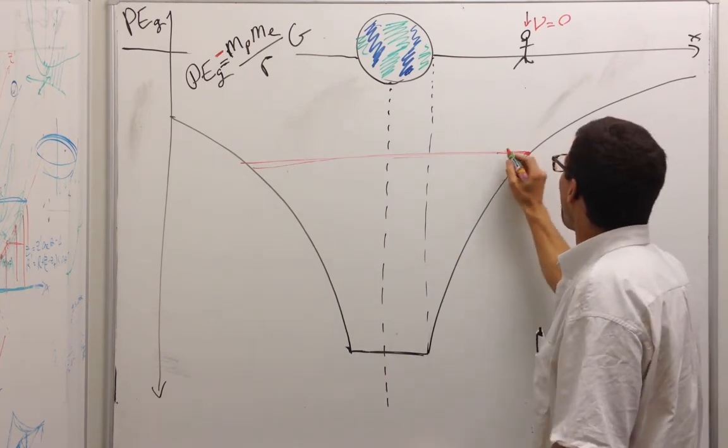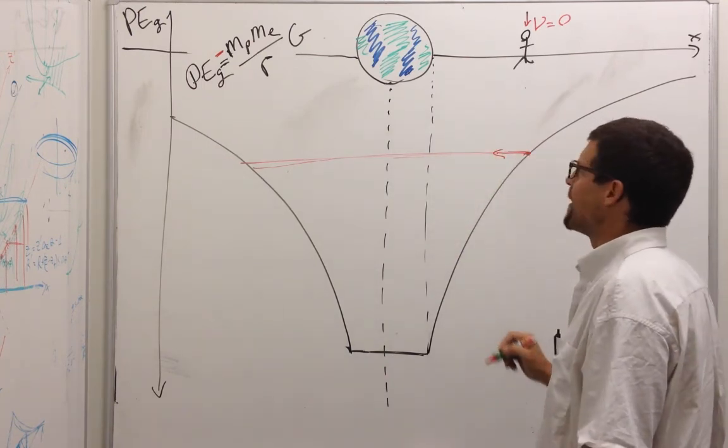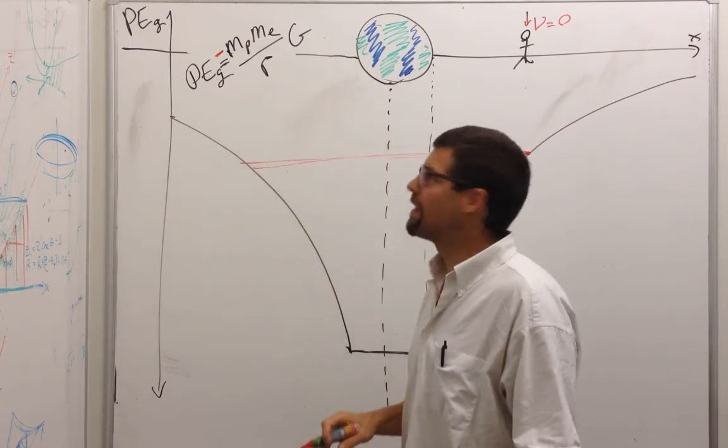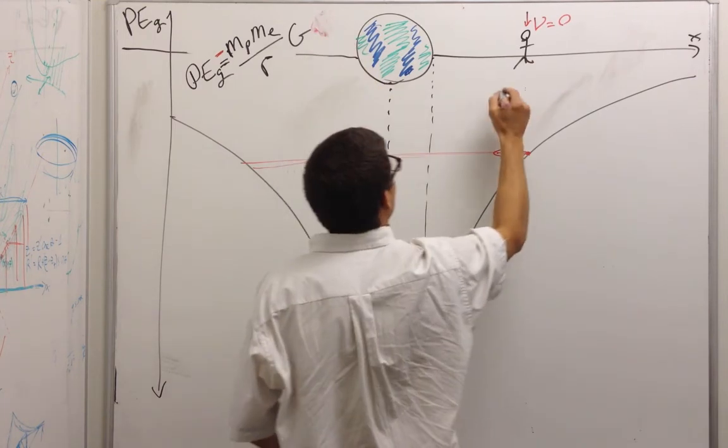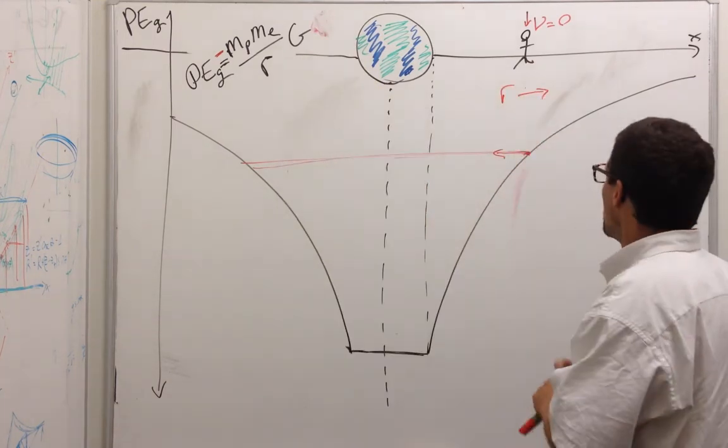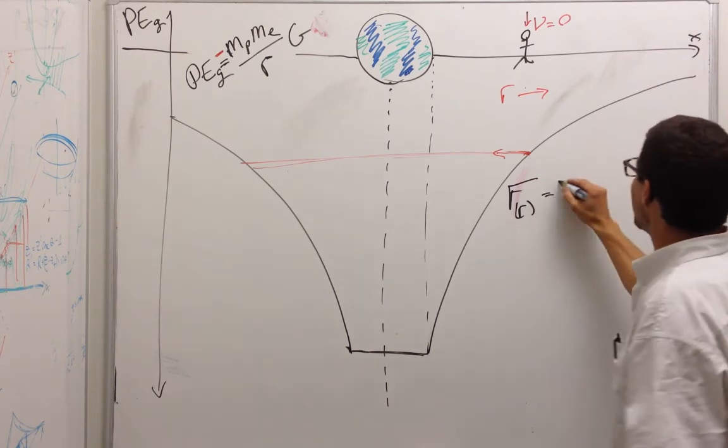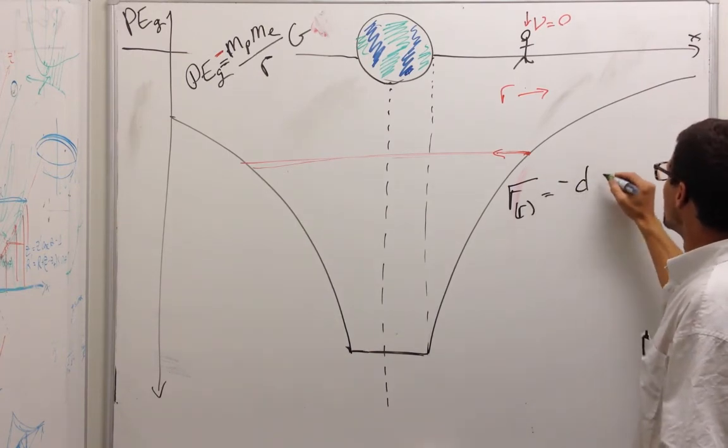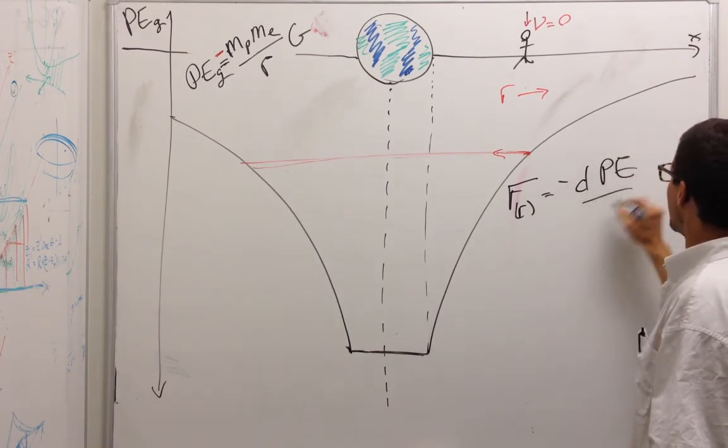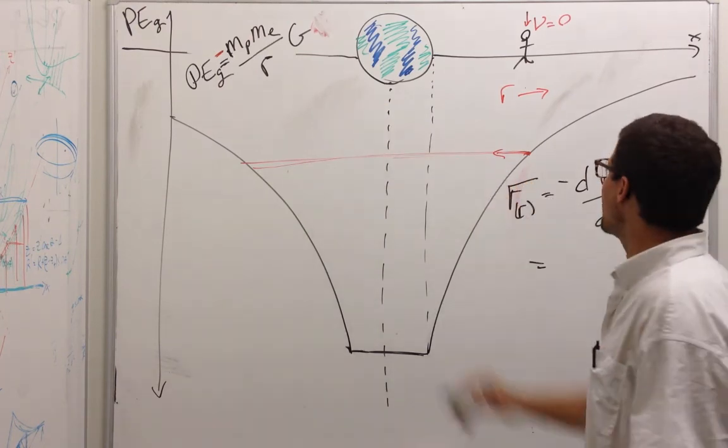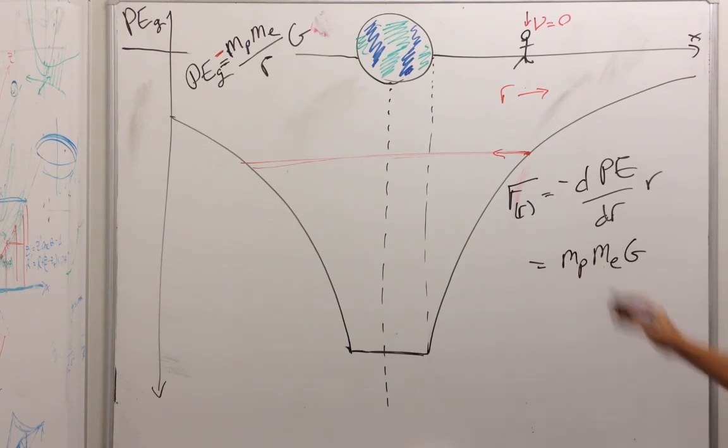But we're curious, what is the force pulling you to the planet? We know that it should be the gradient of that potential energy. Let's call this the r direction. We're going to say that the force in the r direction is equal to the negative of the gradient, d potential energy dr, in the r direction. So we just take that gradient, we get those three constants, and that's r to the negative 1, which gives us negative r to the negative 2.